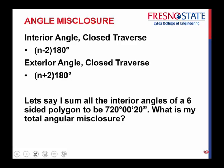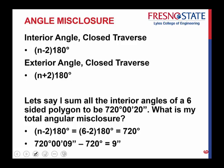For example, say I sum up all the interior angles of a six-sided polygon to be 720 degrees 9 seconds. What is my total angular misclosure? We know the sum is supposed to be exactly 720 degrees. So 720°09" minus 720°00" gives us 9 seconds — we were 9 seconds too large, which is a positive misclosure. If we misclosed below what it's supposed to be, it would be a negative misclosure.